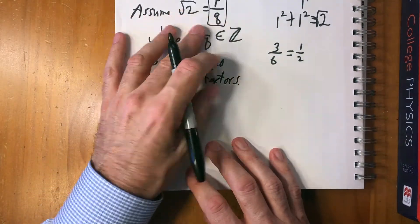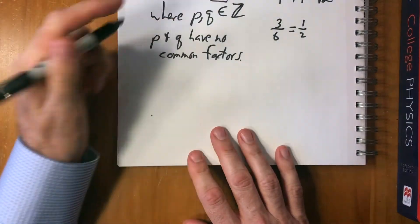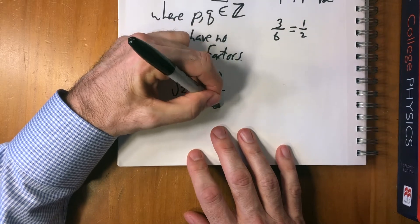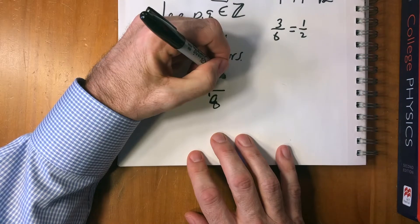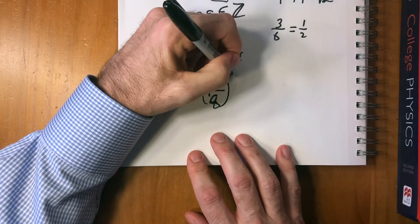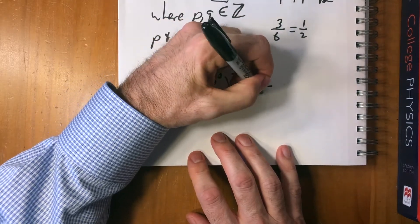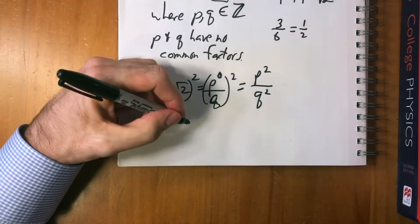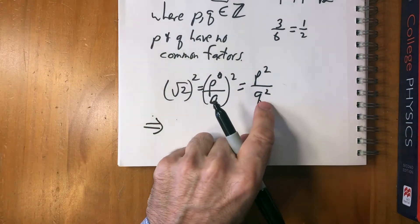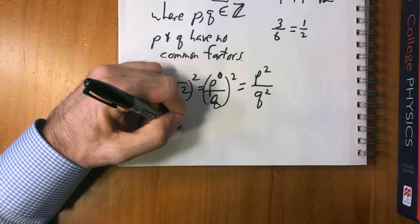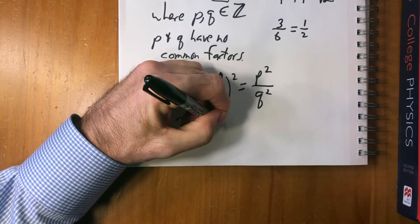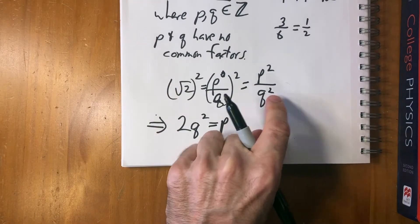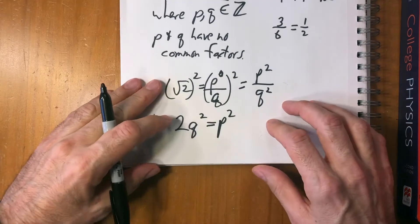With that assumption in mind, let's see what happens. Let's do some math. Square both sides: square root of two equals p over q, so that's p squared. Square root of two squared is two. Then we take the q and put it over to the other side, so we have 2q² = p². We just squared that and multiplied both sides by q squared.